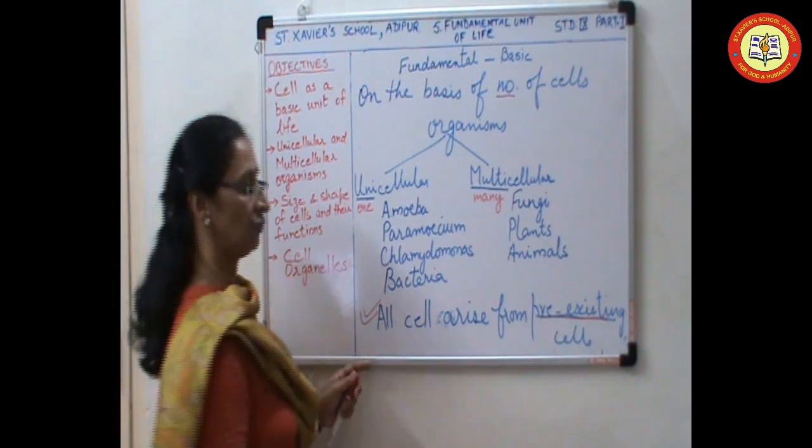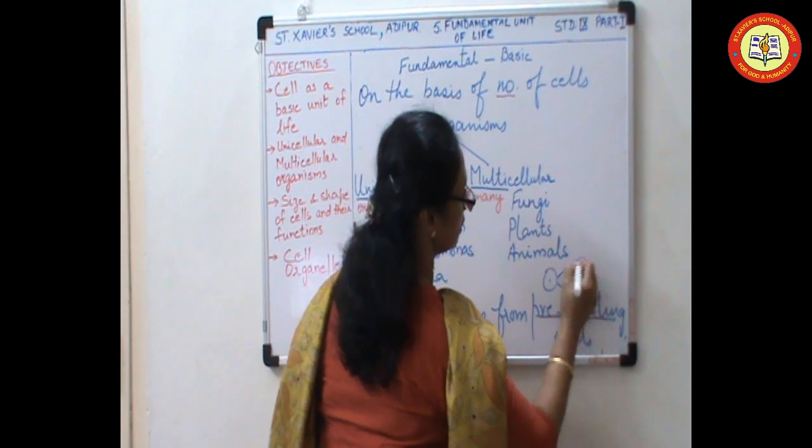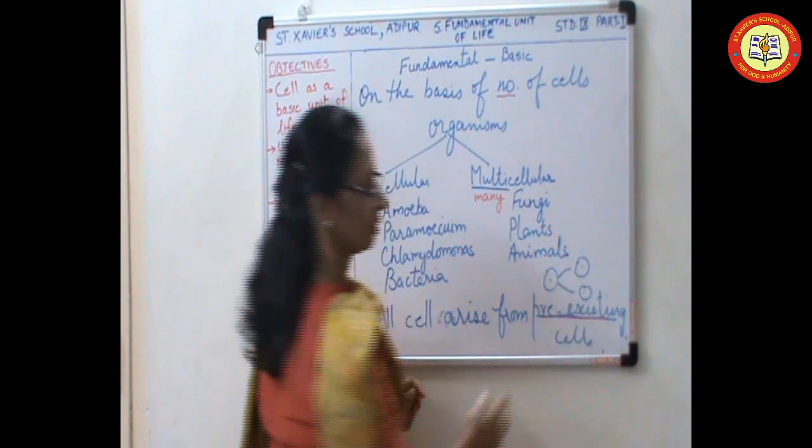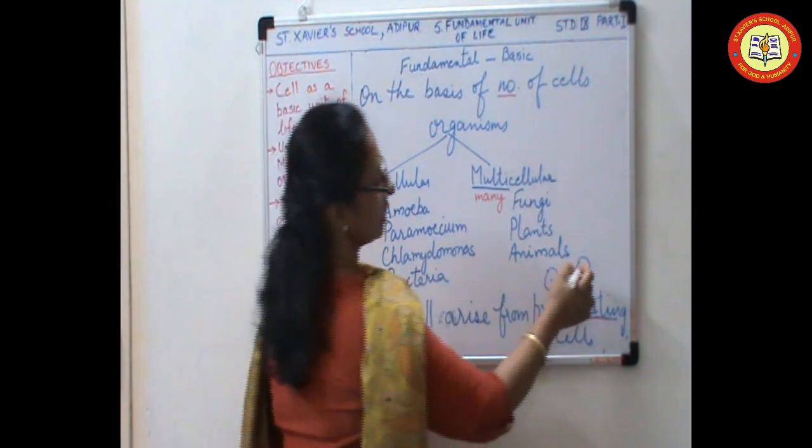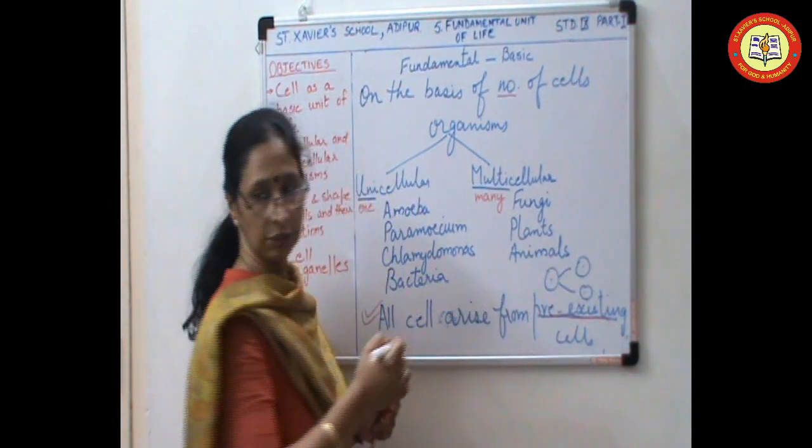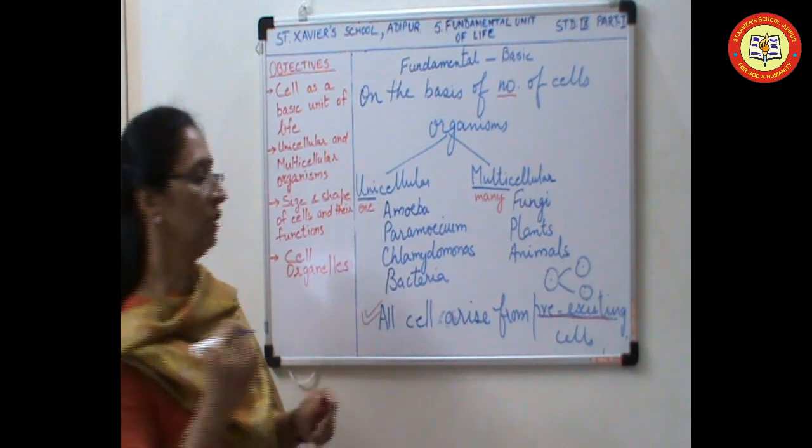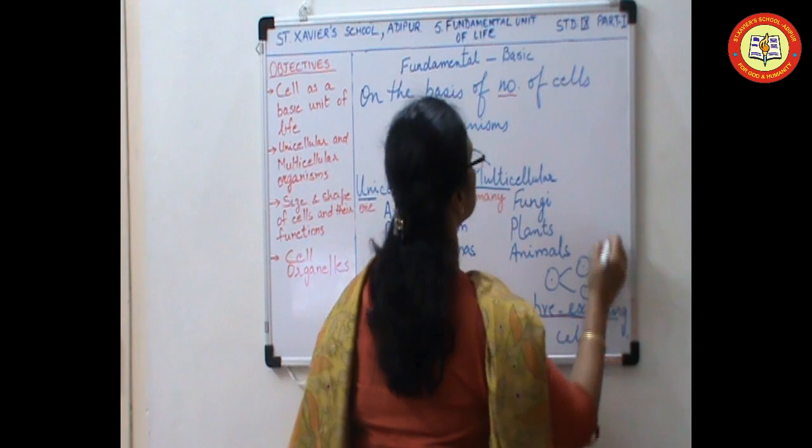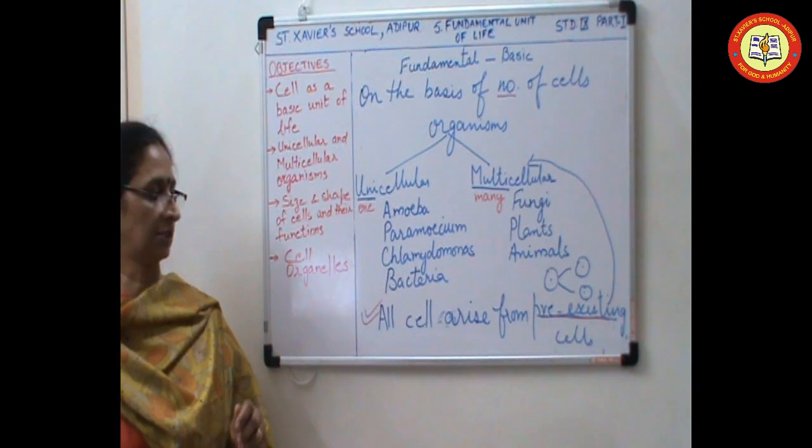Pre-existing cells. That means the cells divide. The cells divide and form their own kinds. So multicellular organisms are formed from single cell. All these multicellular organisms are formed from single cells.